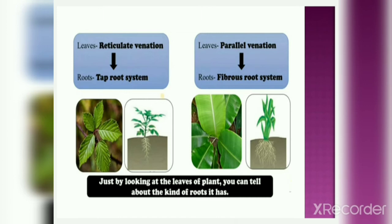Just by looking at the leaves of a plant, can you tell about the kinds of roots it has? The answer is yes. If the leaves have reticulate venation — a net-like design in leaves — the plant will have a tap root system. And if the leaves show parallel venation, the plant will have a fibrous root system. So just by looking at the leaves, you can tell what kind of roots the plant has.